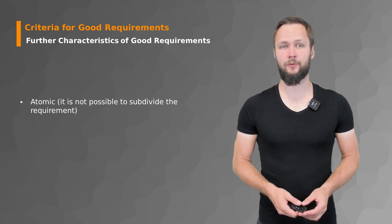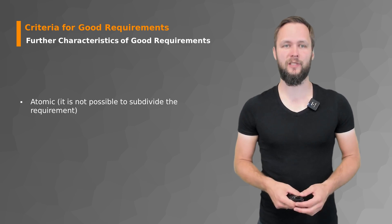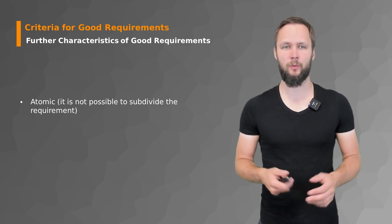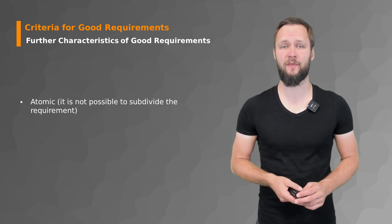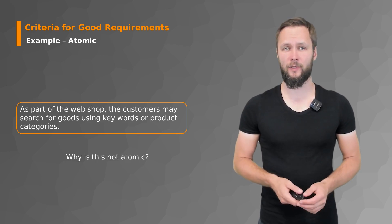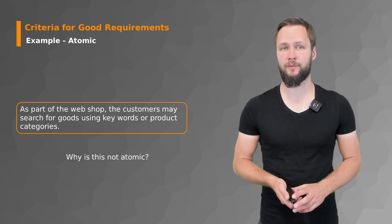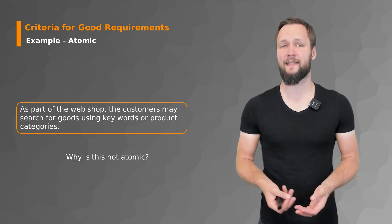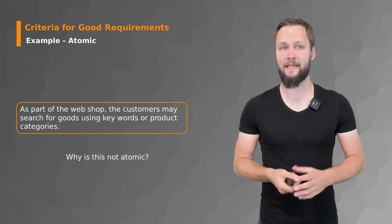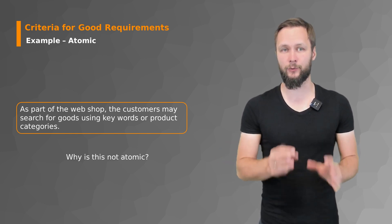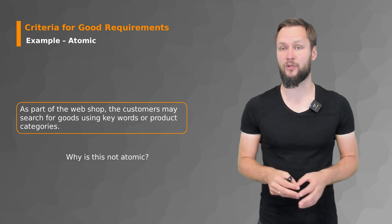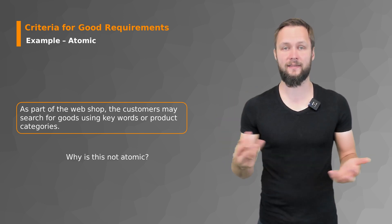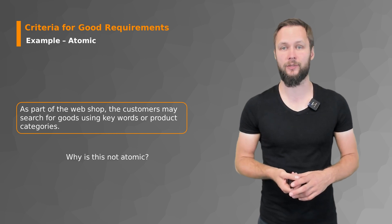There are further characteristics of good requirements worth looking at in more detail using examples. First, good requirements should be atomic — it must not be possible to subdivide the requirement any further. For example, a requirement stating 'as part of the webshop, customers may search for goods using keywords or product categories' is a rather big and vague requirement that needs to be subdivided into more specific requirements regarding search, product categories, and the webshop theme. It's like asking someone to just create a social network for you — it's not a good requirement.